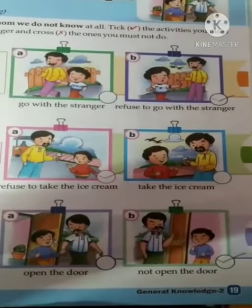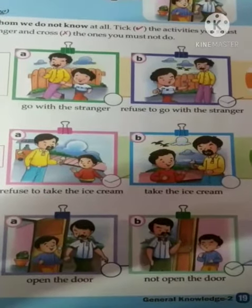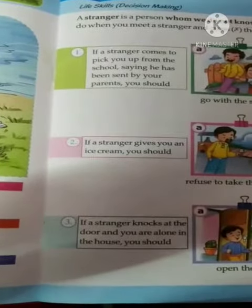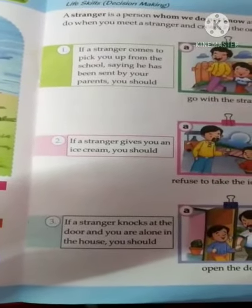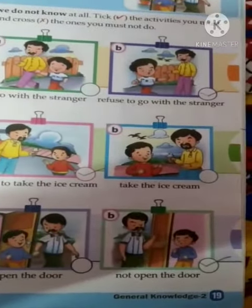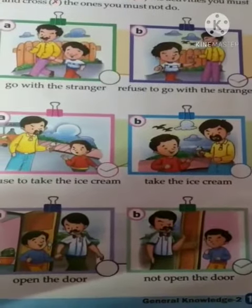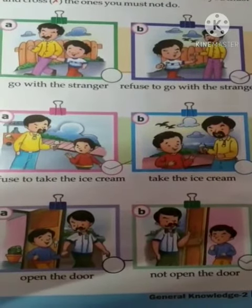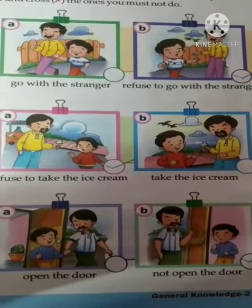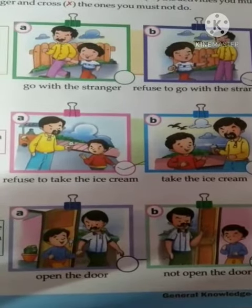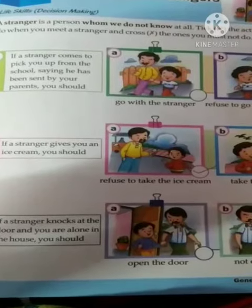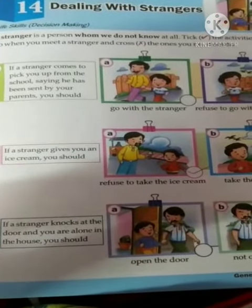Bacho, ye chapter bahut most important hai aapke liye, kyunki abhi aap chhote hain. Aapko seekhna chahiye ki aapko kis tarike se kis person ke saath deal karna chahiye. Strangers se hume apni security rakhni hai, unse bachao karna hai, kyunki woh hume danger mein daal sakte hain. Isliye ye chapter aaj aapki book mein diya gaya hai — Dealing with Strangers.